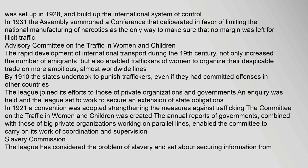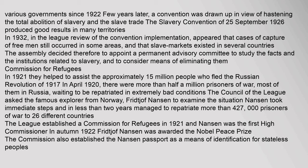The League considered the problem of slavery and set about securing information from various governments since 1922. A few years later, a convention was drawn up in view of hastening the total abolition of slavery and the slave trade. The Slavery Convention of 25 September 1926 produced good results in many territories. In 1932, the League's review of the convention implementation revealed that cases of capture of free men still occurred in some areas and that slave markets existed in several countries. The Assembly therefore decided to appoint a permanent advisory committee to study the facts and institutions related to slavery and to consider means of eliminating them.